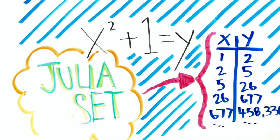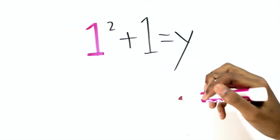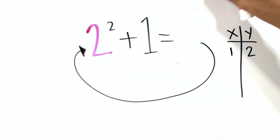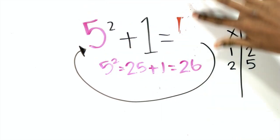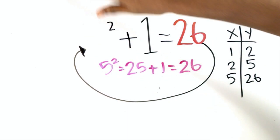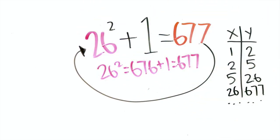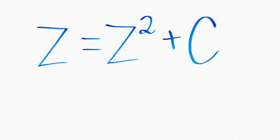As an example, using x² + 1 = y: first he plugged in 1 for X — 1 + 1 = 2, so then you plug in 2 for X — 4 + 1 = 5, then you plug in 5 for X and get 26, you plug in 26 for X and get 677, and so on. To construct a set, Gaston used a popular complex polynomial system expressed as f(z) = z² + c.